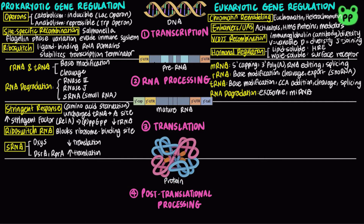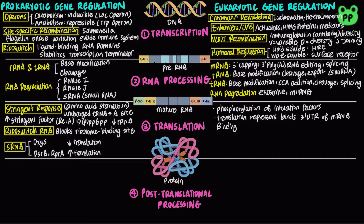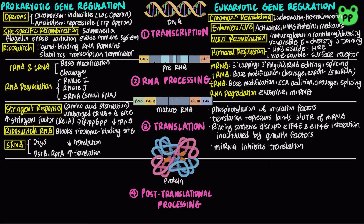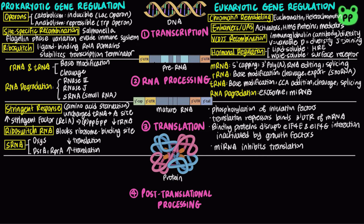Eukaryotic translation is regulated in four ways. Translational initiation factors are subject to phosphorylation by protein kinases; the phosphorylated forms are often less active and cause a general depression in translation in the cell. Some proteins bind directly to mRNA and act as translational repressors, and many bind specific sites in the 3' untranslated region to prevent translational initiation. Some binding proteins also disrupt eukaryotic initiation factor 4E and 4G interaction. These proteins are in turn inactivated by growth factors. Lastly, microRNAs that are only partially complementary to the target mRNA block its translation.